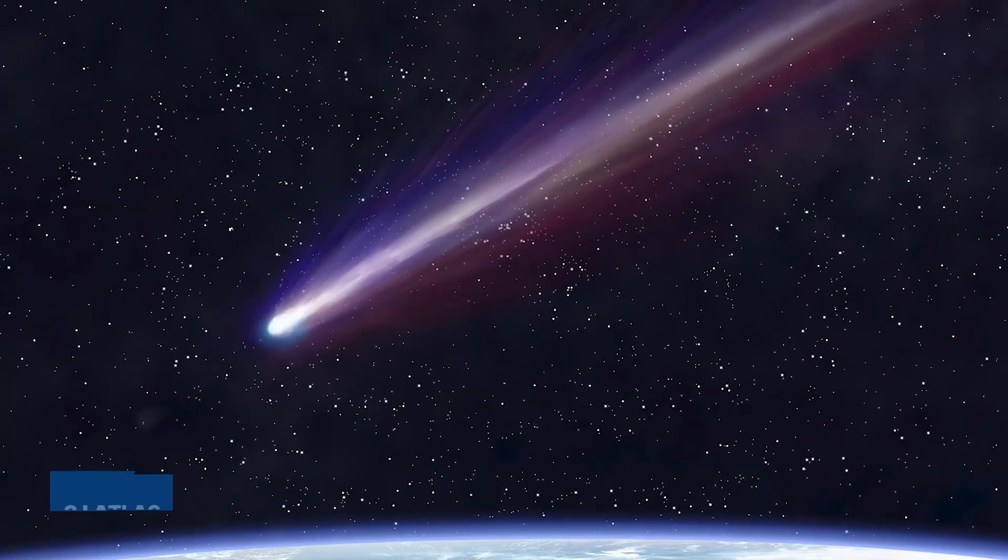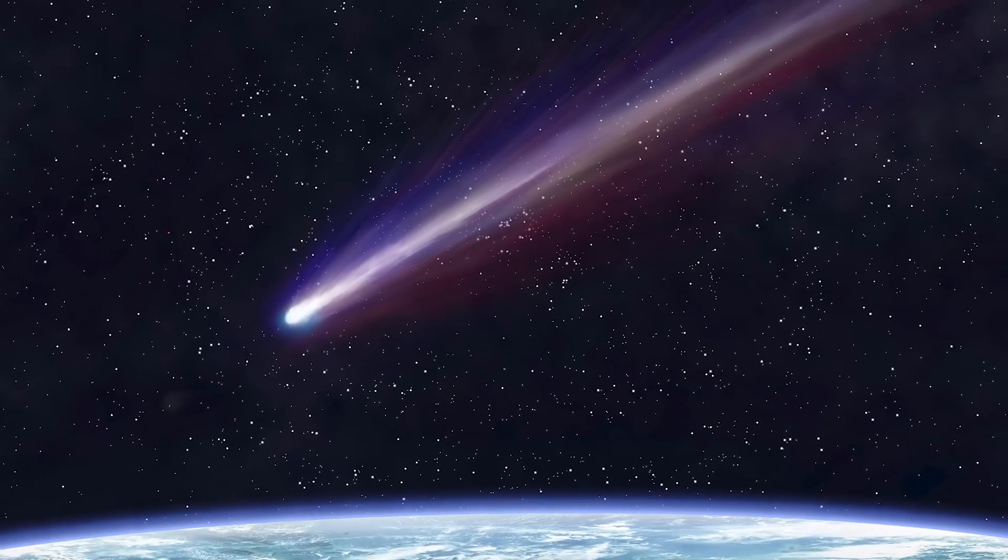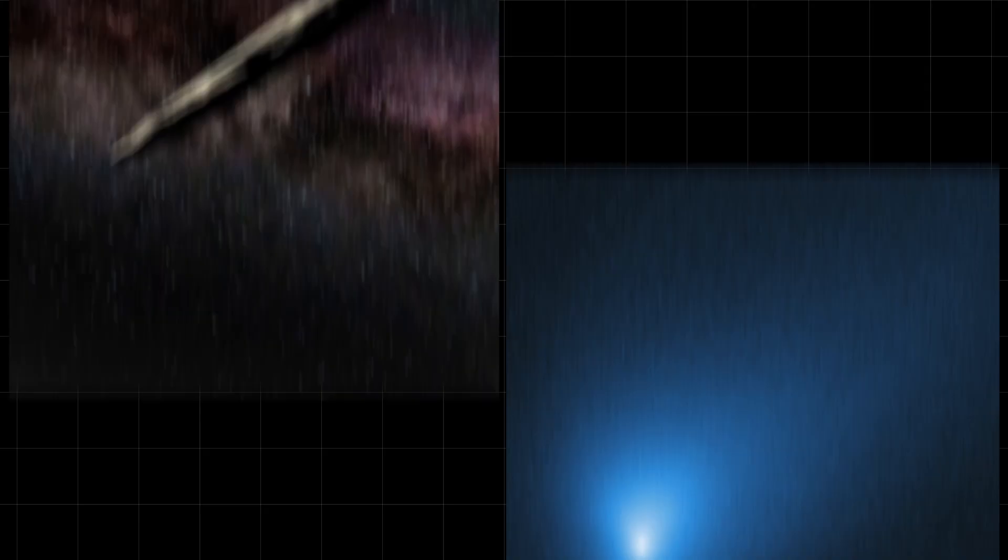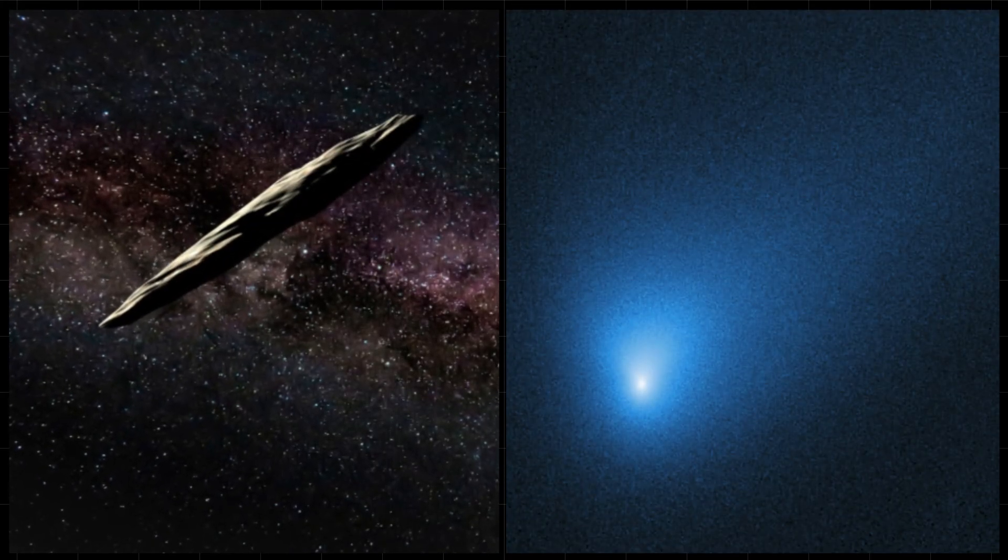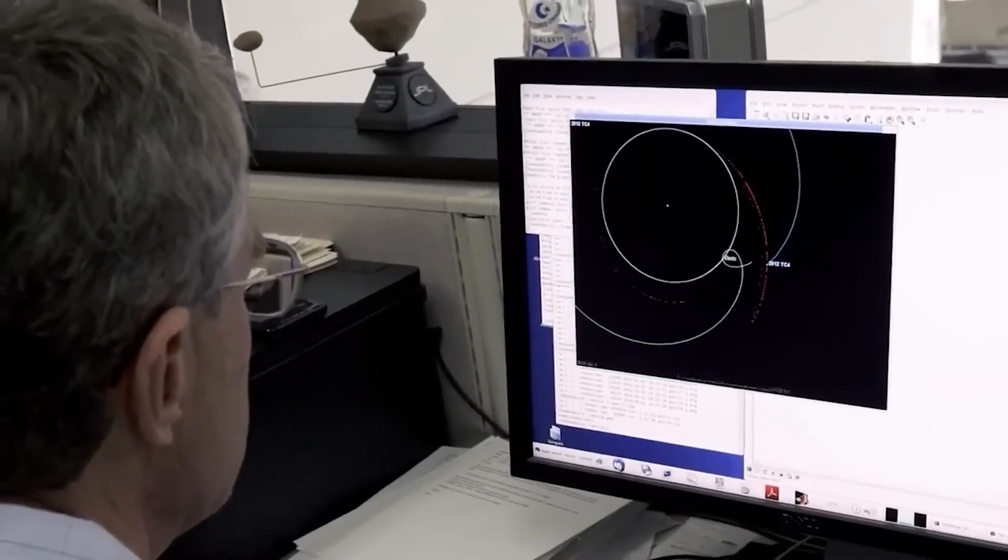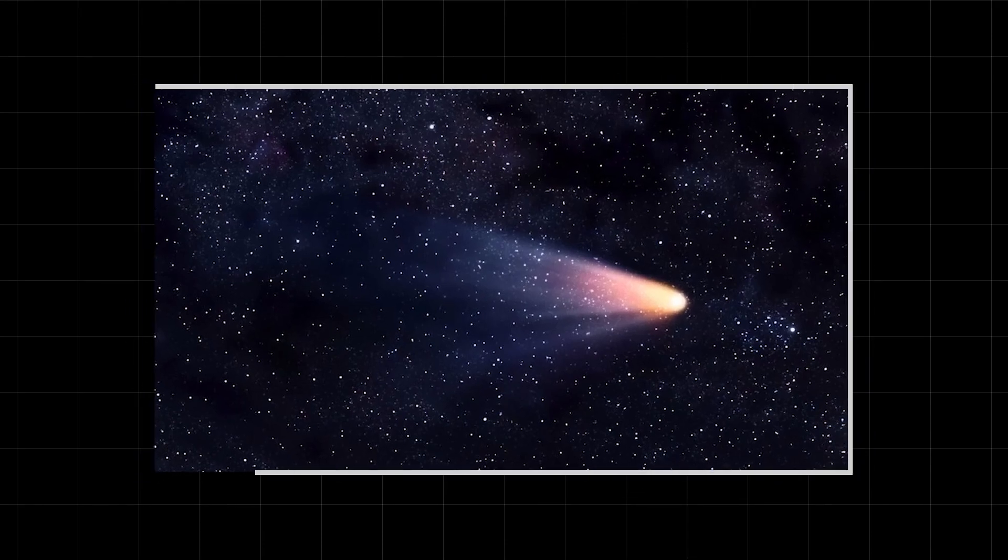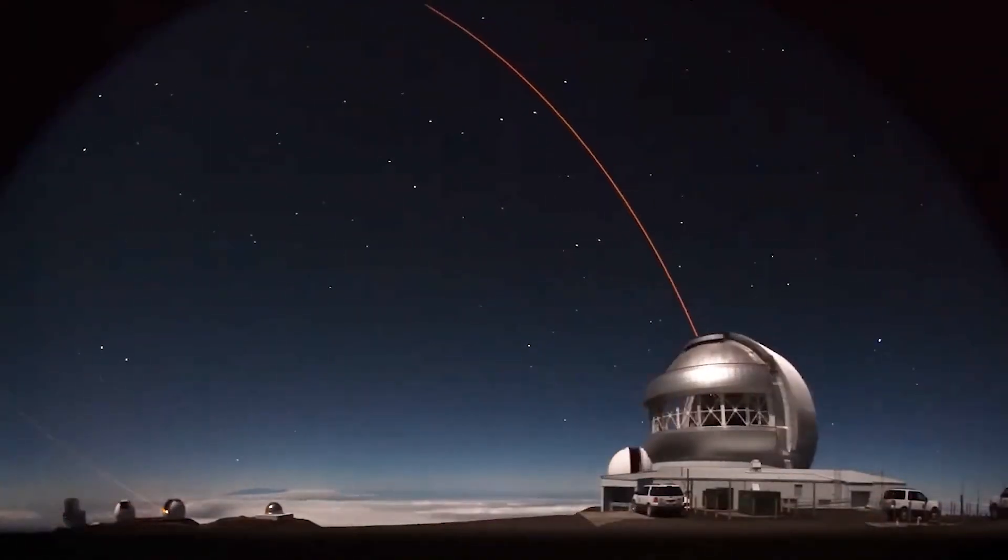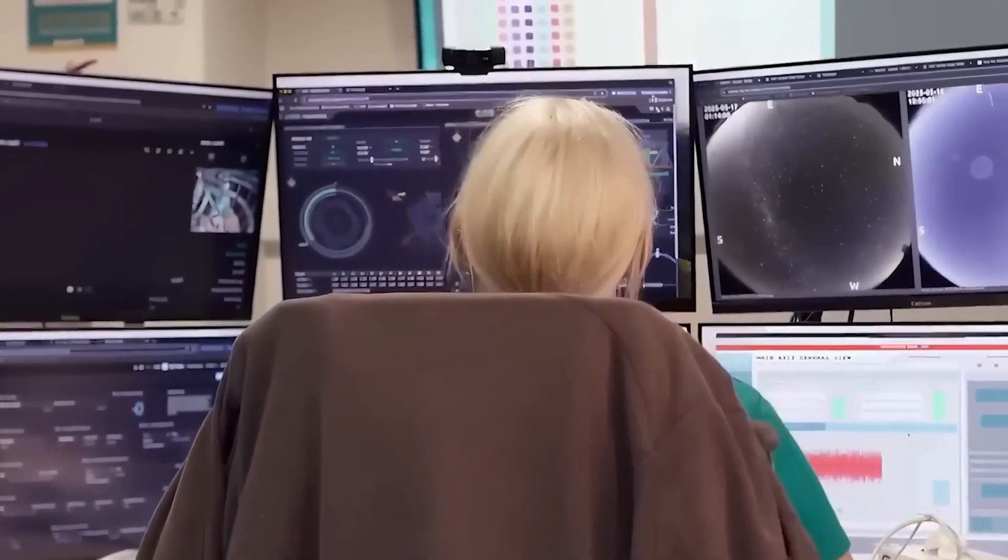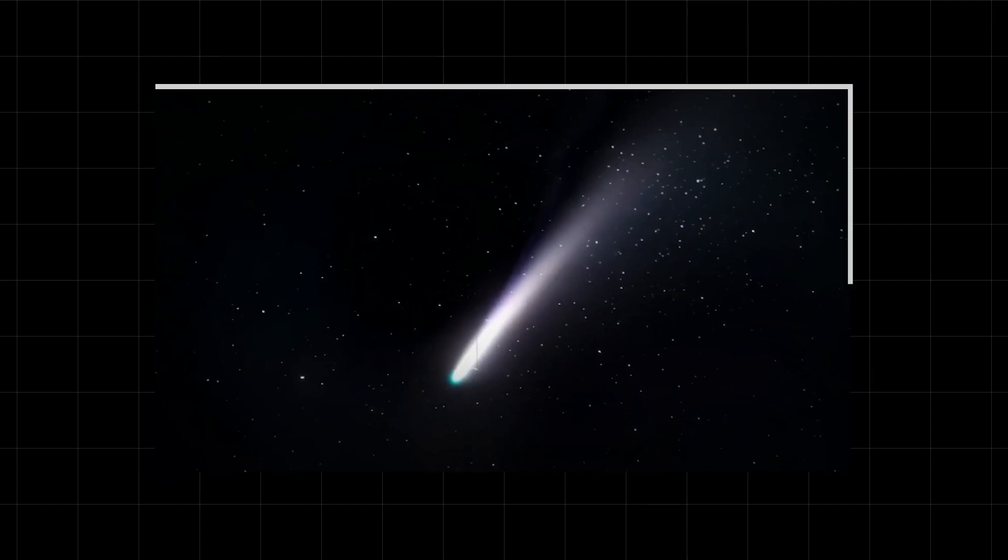Its name is 3i Atlas and it is the third interstellar object humanity has ever detected. But this one is different. This one is a ghost. Unlike the previous interstellar visitors, Oumuamua and Borisov, this one was spotted as it was leaving. We caught only its fading reflection as it sped away, back into the endless night. But what our telescope saw in that fleeting glimpse is so strange, so utterly baffling, that it is shaking the very foundations of astronomy. 3i Atlas is not just a rock. It's a puzzle that defies our understanding of how solar systems are even built.